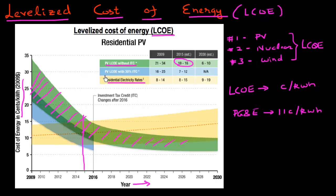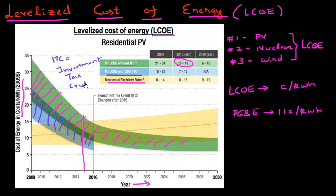LCOE depends heavily on public policy. The blue envelope plots LCOE with an investment tax credit, or ITC. Currently in the United States, if you buy a solar panel, you get an investment tax credit of 30%, which allows you to subtract 30% of your initial investment from your tax bill — bringing down the levelized cost of energy for solar by 30%.